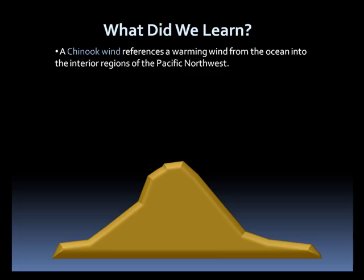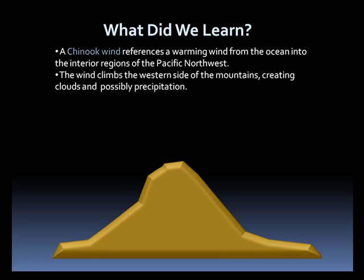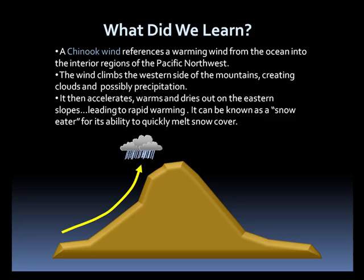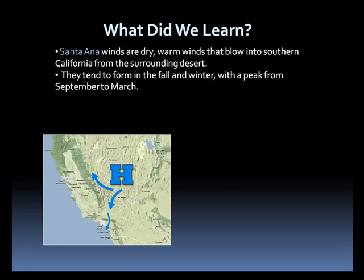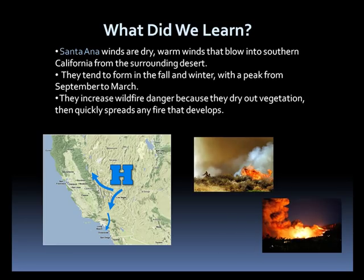Chinook winds reference a warming wind from the ocean into the interior regions of the Pacific Northwest. Winds climb the western side of the mountains, creating clouds and possibly precipitation as they rise, then accelerate, warm, and dry out on the eastern slopes, resulting in rapid warming. Chinook winds can also be known as snow eaters for their ability to quickly melt snow cover. Santa Ana winds are dry, warm winds that blow into southern California from the surrounding desert. They tend to form in the fall and winter, peaking September through March, and are known for increasing wildfire danger as they dry out vegetation and quickly spread any fires that develop.